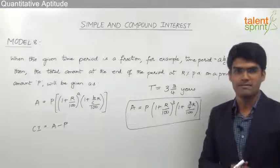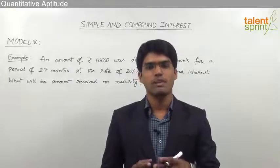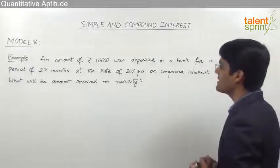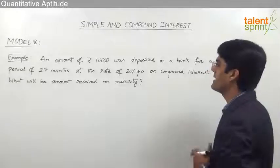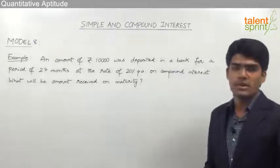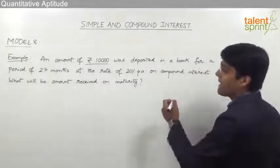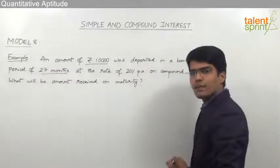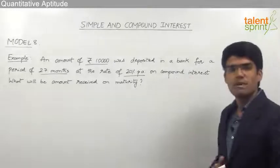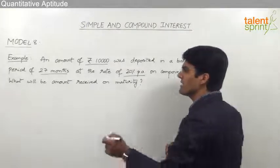This is how we solve questions related to compound interest or total amount for a fractional time period. Let us now take an example: an amount of ₹10,000 was deposited in a bank for a period of 27 months at the rate of 20% per annum on compound interest. What will be the amount received on maturity?